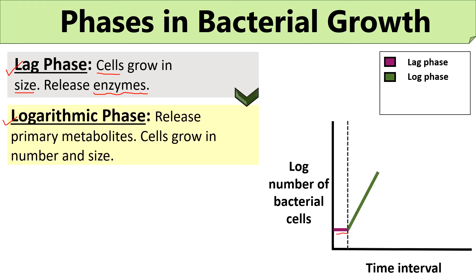The logarithmic phase, or log phase, is the second growth phase of bacteria, characterized by cell doubling or an exponential increase in cell number as well as cell size. In the graph, the increase in cell number is represented by a steep curve. The cells in the log phase show intense metabolic activity and tend to utilize as many nutrients as available in the growth medium. The bacterial cells produce primary metabolites, resulting in a rapid increase in the growth rate of bacteria.